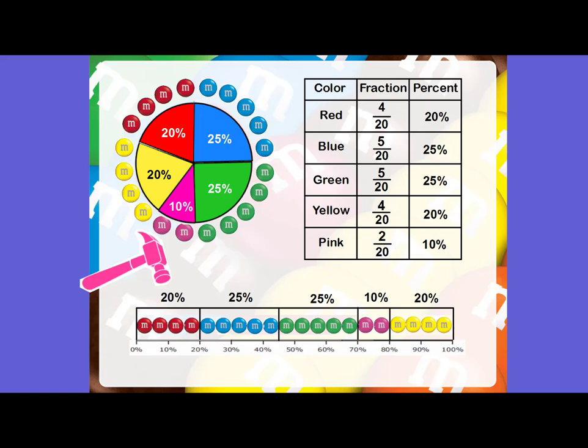A percent bar graph is when you take that circle graph that you made and you kind of pound it out into a bar. So it's like a rectangle, and at the bottom of the rectangle you can see it goes from 0%, which would be none of the M&Ms, to 100%, which would be all of the M&Ms in the bag. And you would divide it up based on the percent, not the number of pieces of candy, but the percent. So if you have 20% that are red, you see that it goes 10 and 20. And for 25% that are blue, it would be 10, 20, and 25%.